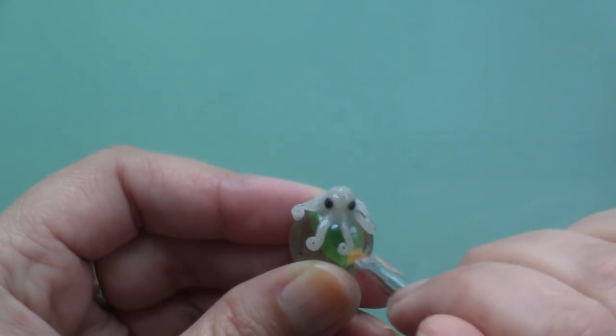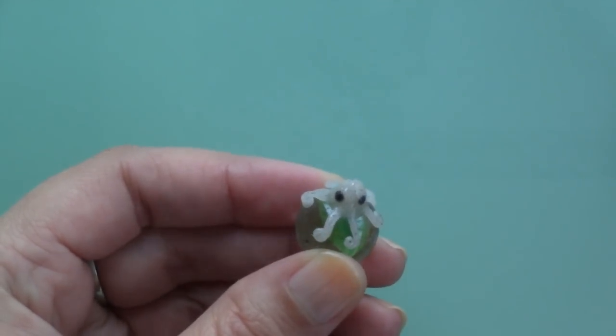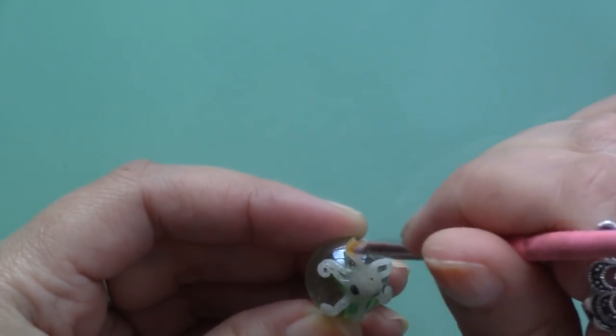If you want, you can add a layer of Fimo liquid on him to strengthen the clay. Then bake him again for 20 minutes.